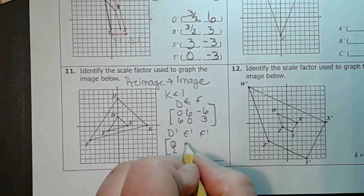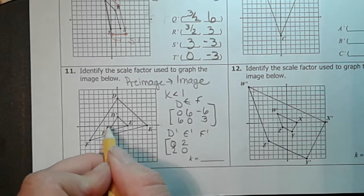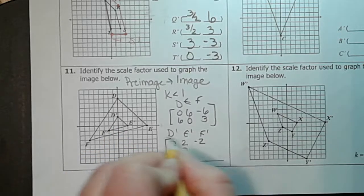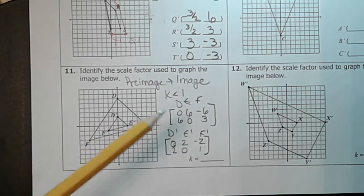E prime is at two, zero. And F prime is at negative two, one.